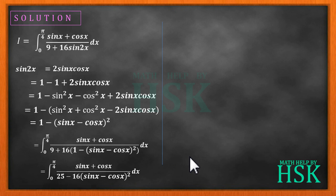Now you can see that differentiation of sin x minus cos x is equal to cos x plus sin x which is there in the numerator. So the reason why we solved sine of 2x was to make the substitution possible for solving the integral.